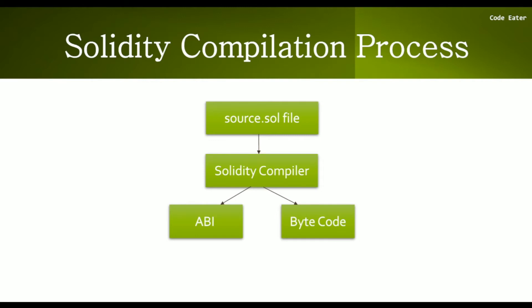Let's say you are using React.js as your front-end. This React.js application wants to communicate with your Solidity smart contract. In order to do that, React.js will use the ABI to communicate with the smart contract. If React.js wants to call some function or access some variable of the smart contract in source.sol, it will need the ABI of that smart contract.